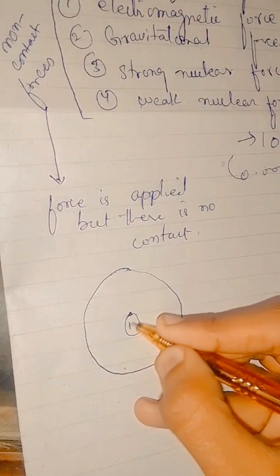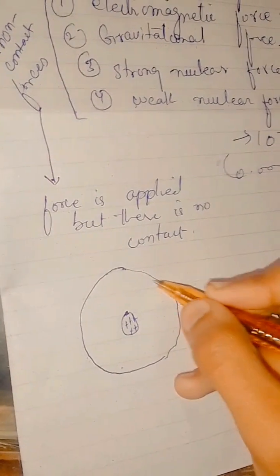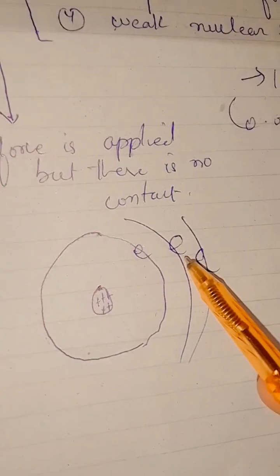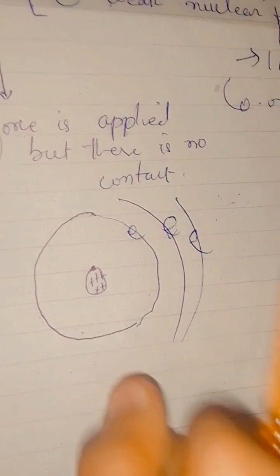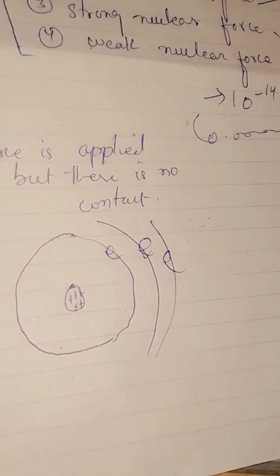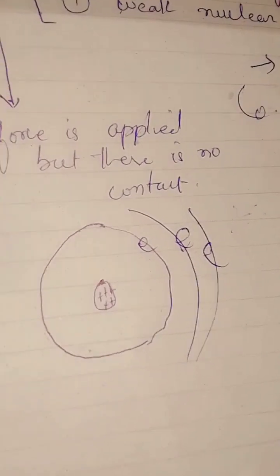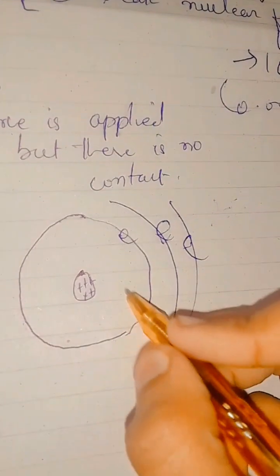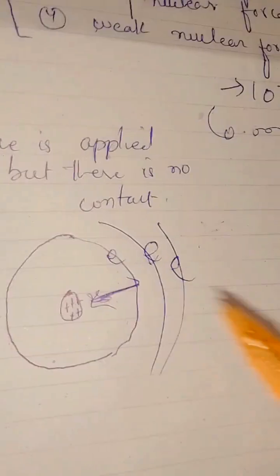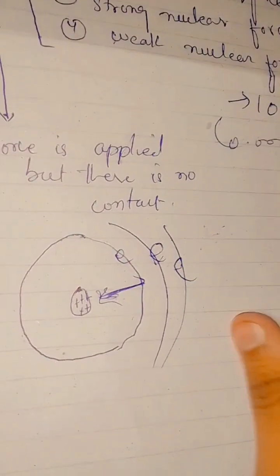For example, take a nucleus. In the nucleus there are many positive charges, and electrons are around the nucleus. Why are the electrons bound to the nucleus? Because there is a strong nuclear force between them that does not allow the electrons to move away. That is why these electrons are bound to the nucleus.